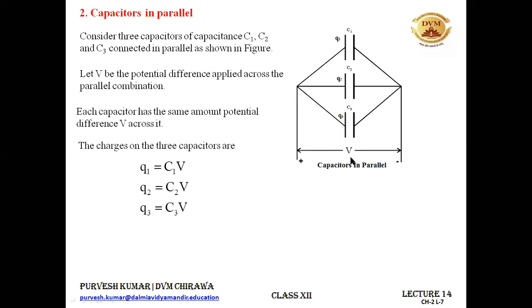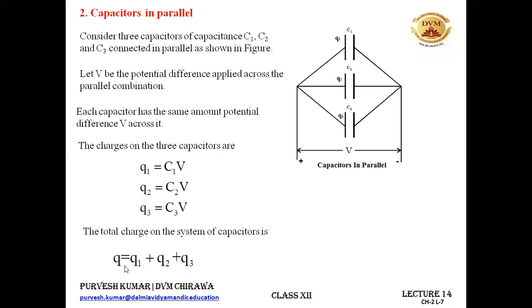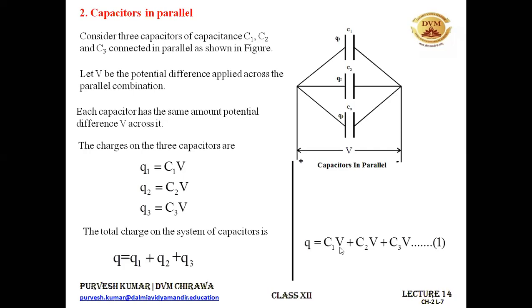The total charge Q supplied by the source is divided into Q1, Q2, and Q3 across the three capacitors. So Q = Q1 + Q2 + Q3. Substituting, Q = C1V + C2V + C3V. This is equation number one, which we will use to find the equivalent capacitance for the parallel combination.